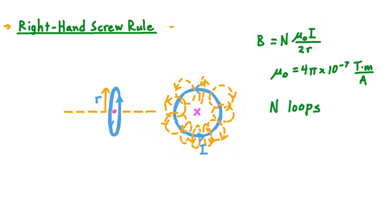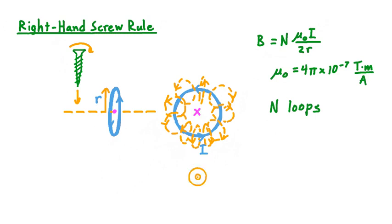To figure this out, we use the right-hand screw rule. If we take a right-handed screw and imagine the direction we would need to turn it to drive it into some surface — say a piece of wood — then by considering the way we're turning the screw and the direction the screw moves into the surface, we can figure out the way the magnetic field at the center of a current-carrying circle points. We orient the screw so that the direction we turn it matches the direction of current in our circular loop. For example, in this loop, current moves counterclockwise, so we position a right-handed screw such that turning it counterclockwise would drive it into a surface. The screw's tip is then pointing out of the screen at us, and that tells us the direction of the magnetic field at the center of this current-carrying loop.